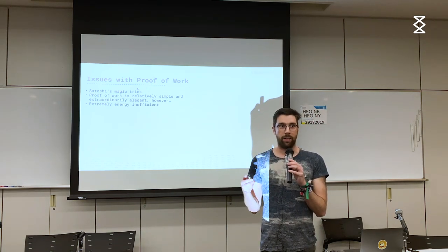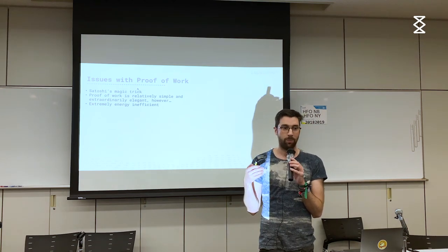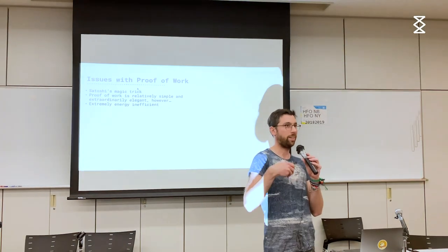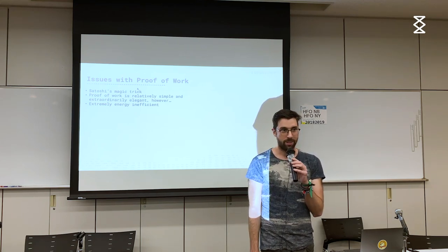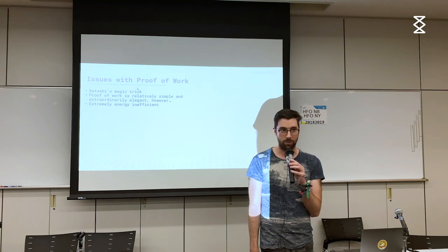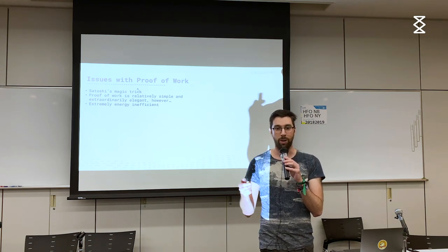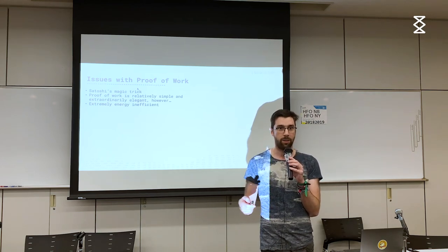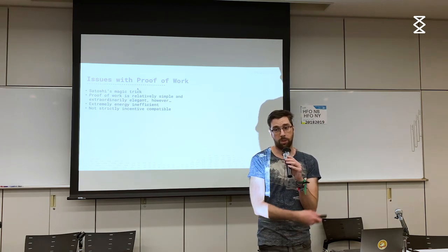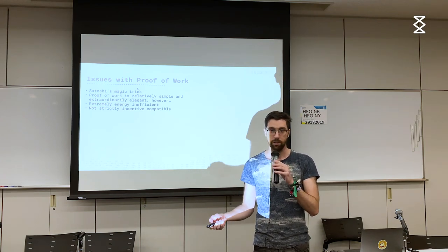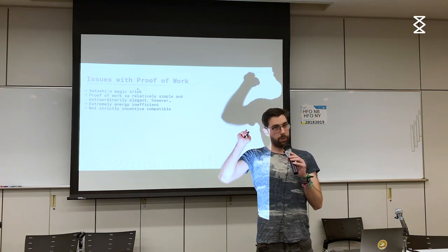As everyone knows, proof of work is energy inefficient — it kills seals and trees and things like that. This is a really interesting debate with multiple sides. Articles say Bitcoin mining is as big as Ireland or Austria, and then Andreas Antonopoulos responds that Bitcoin mining is not wasteful — Christmas tree lights use way more energy than Bitcoin. You have to look at both sides and what that energy is paying for.